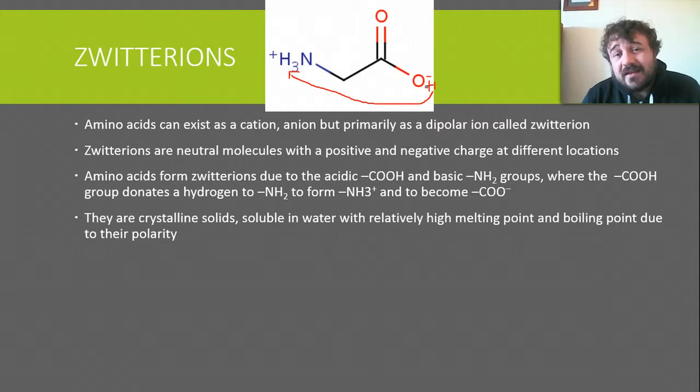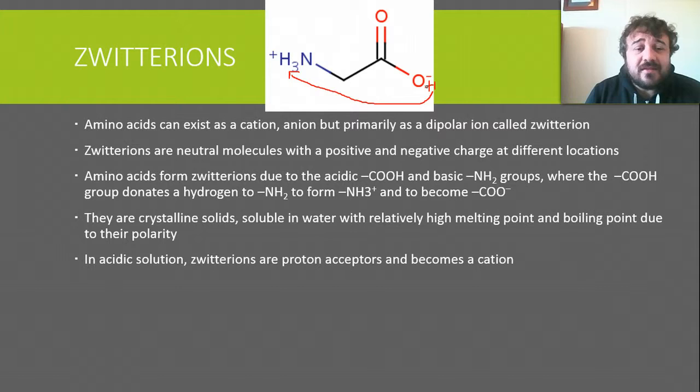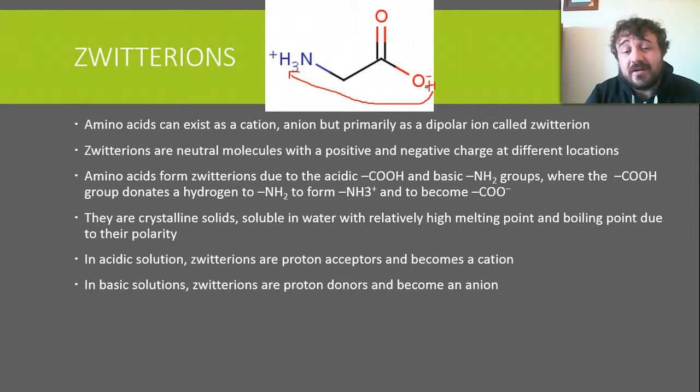Amino acids are crystalline solids because of that ionic-type bonding. They're soluble in water and have fairly high melting and boiling points due to their polarity. In acidic solutions, zwitterions are proton acceptors and become a cation. In basic solutions, they're proton donors and become an anion.